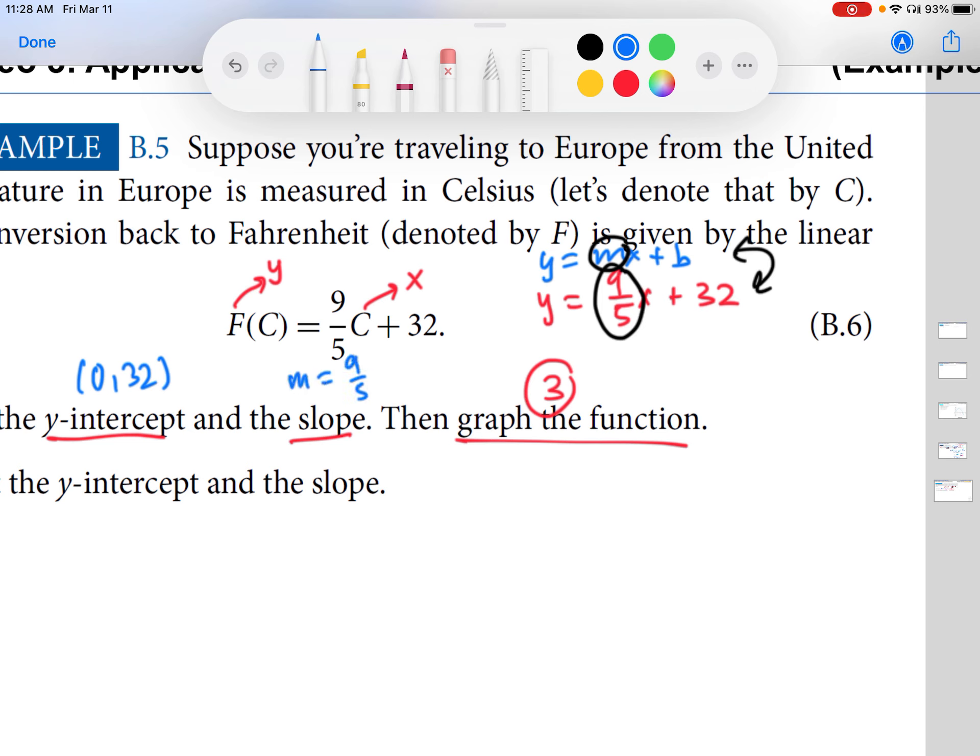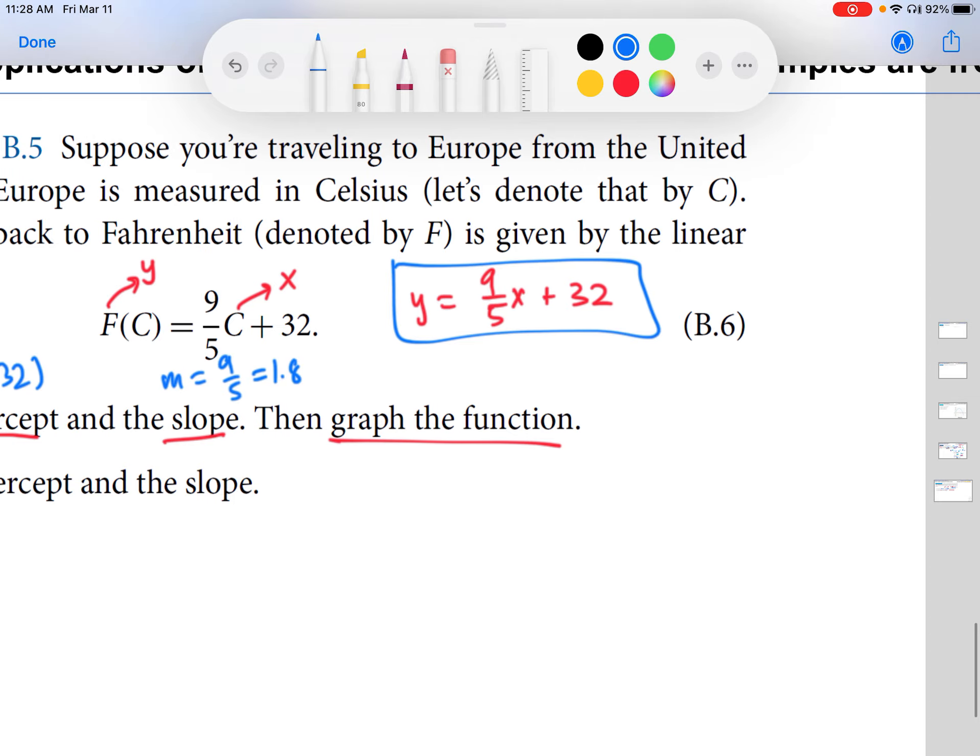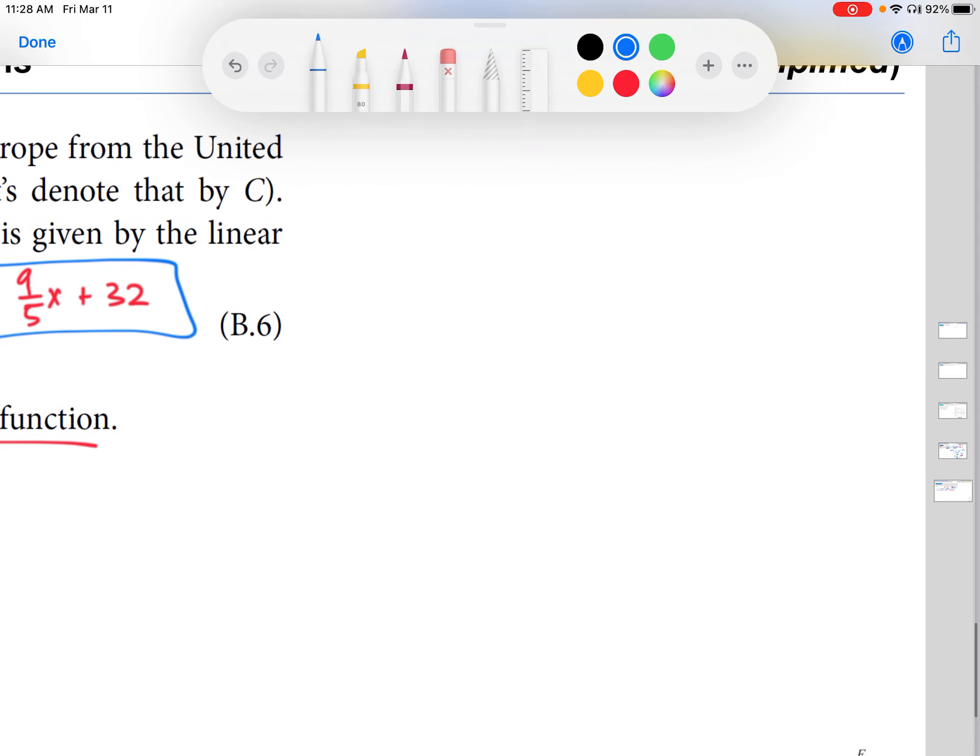It might be useful later, and we will use this in Part B, to just work this out to a decimal. So, this ends up being 1.8. And then number three, graph the function. So, now we are going to graph this linear function over here. And let's set up a set of axes. So, I'm going to rewrite the function here, 9 fifths x plus 32.